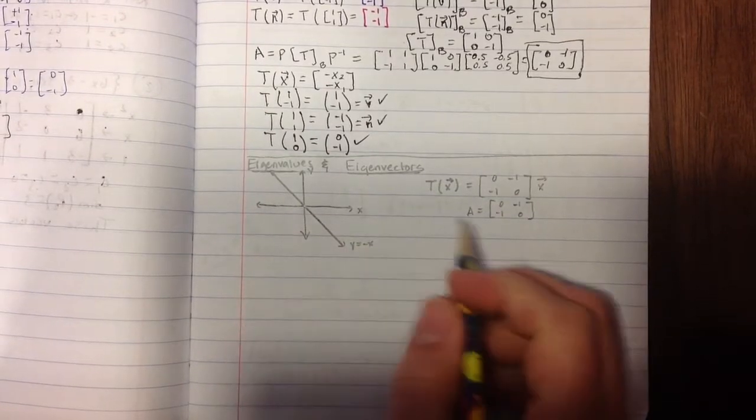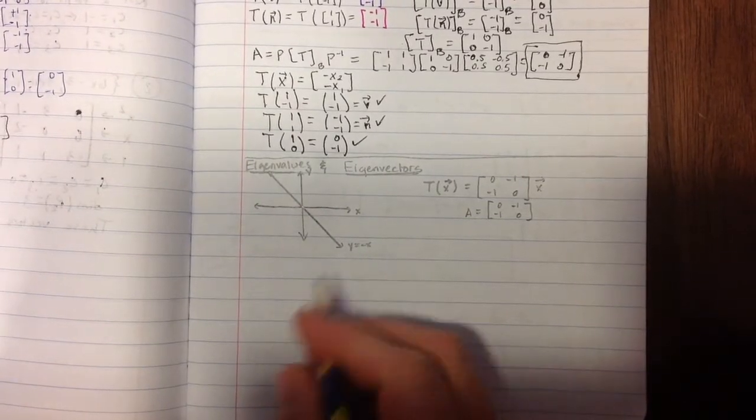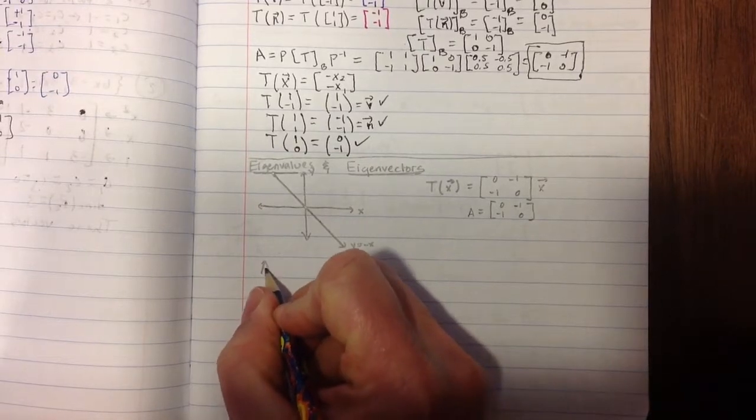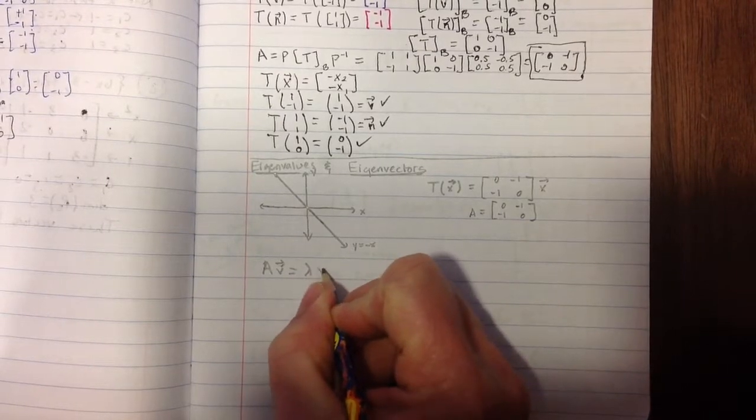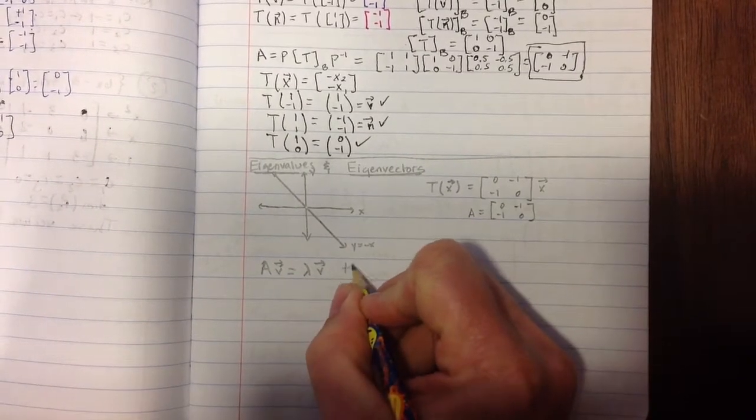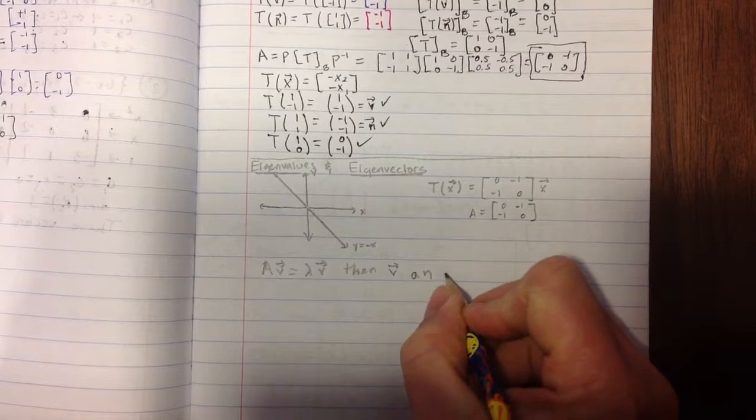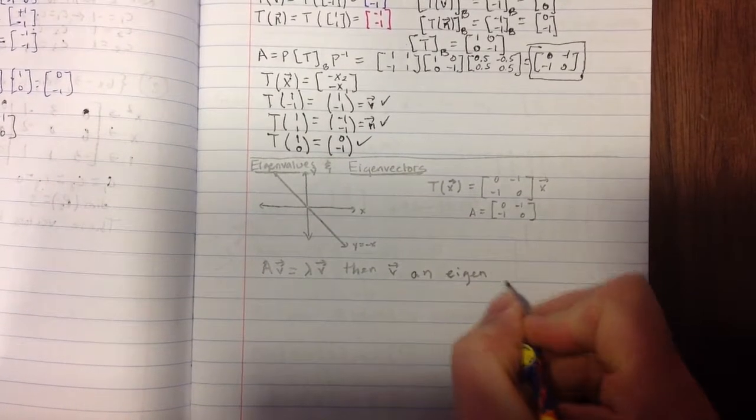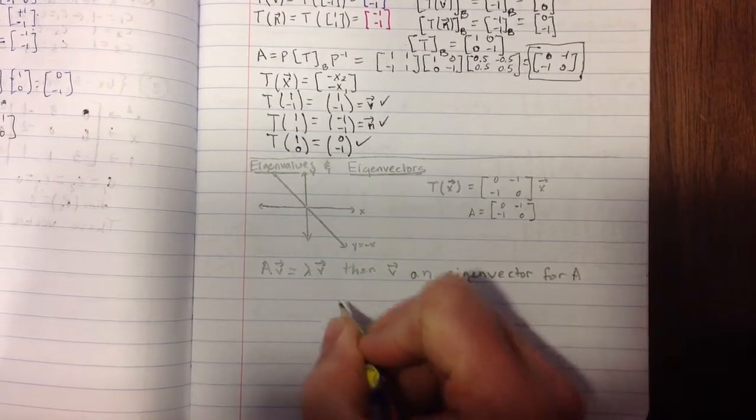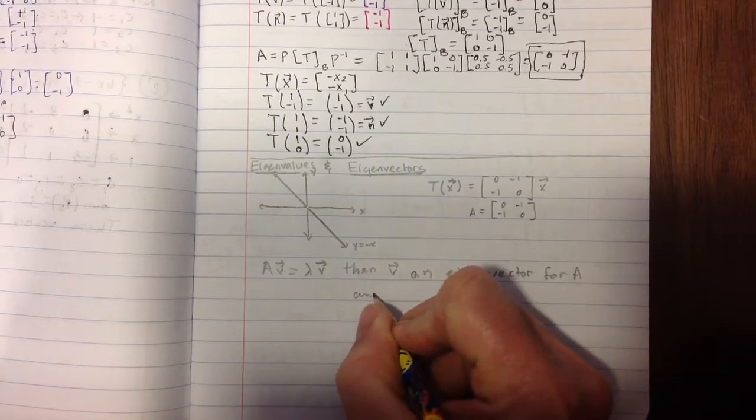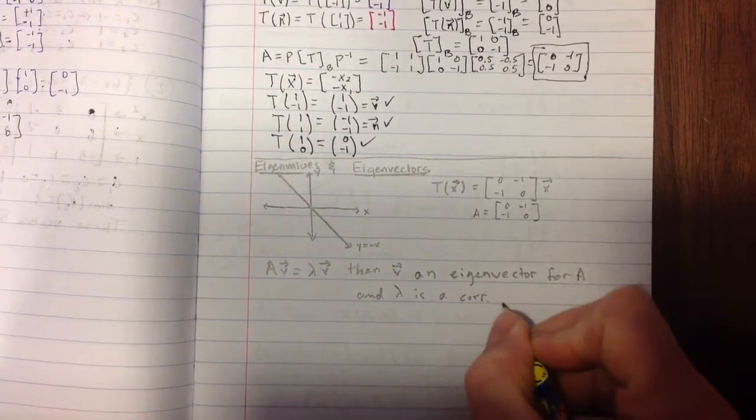Essentially, eigenvalues and eigenvectors look like this. When you have a matrix A, which we found - this is the matrix A for that reflection about the line y equals x - if you take A times a certain vector and you get a scalar multiple of that vector back, then we call V an eigenvector for A, and lambda is a corresponding eigenvalue.